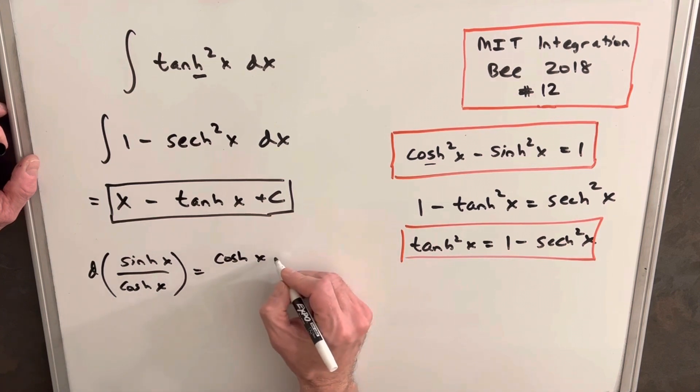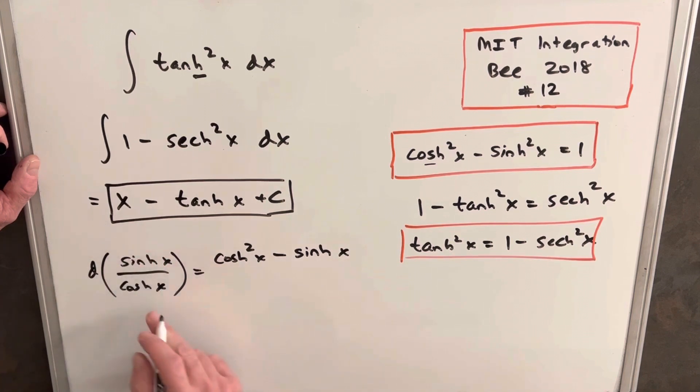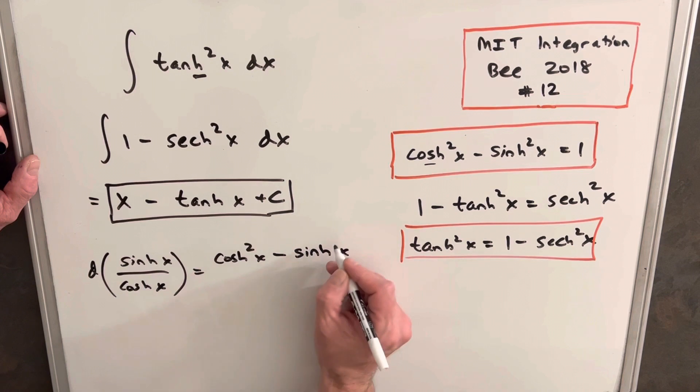Then we include the denominator. So we have another cosh that's just going to be cosh squared minus hyperbolic sine, because we're keeping the numerator. And then we get the derivative of the denominator, which is just going to be another hyperbolic sine. So we get sinh squared.